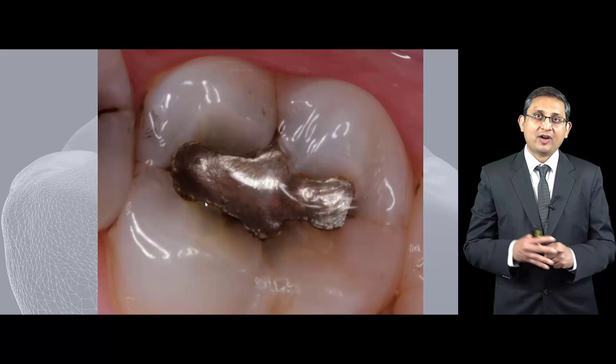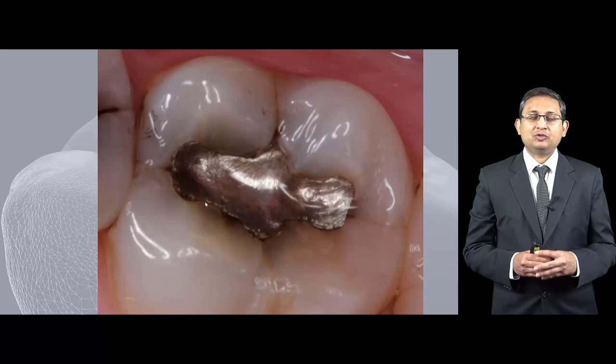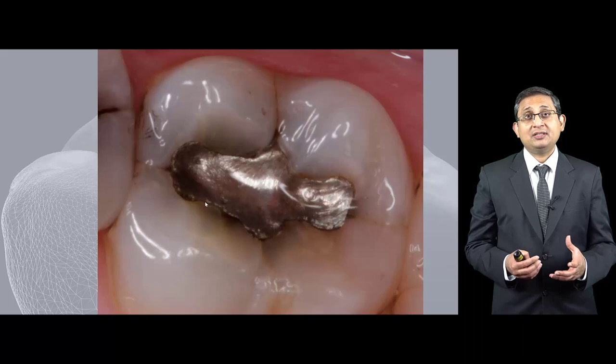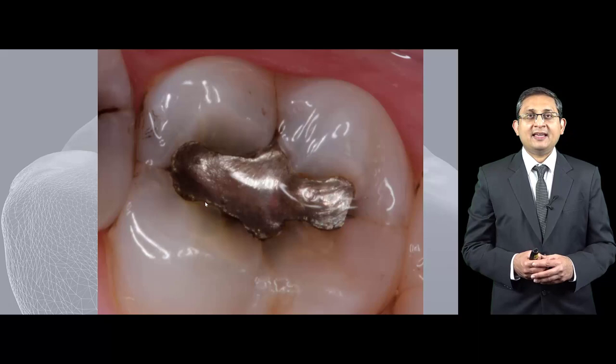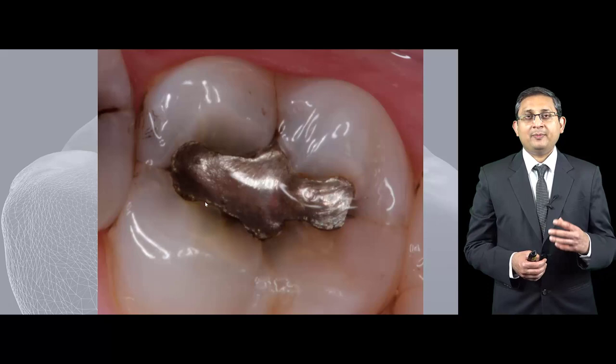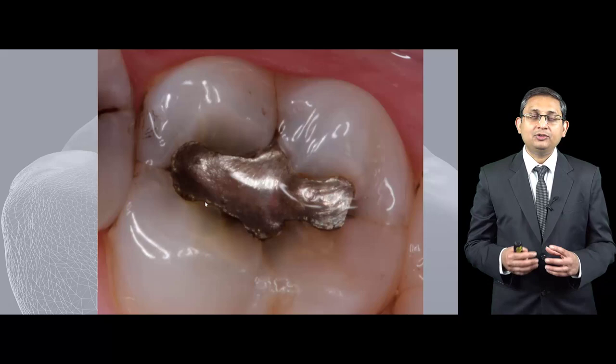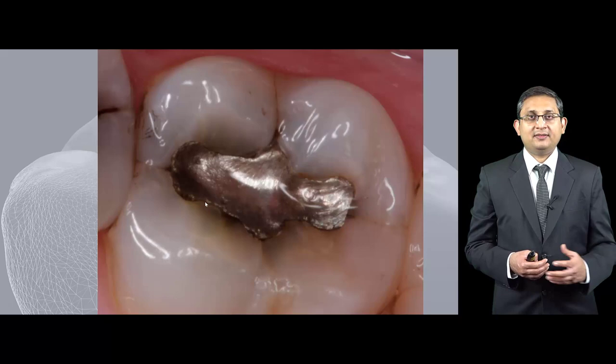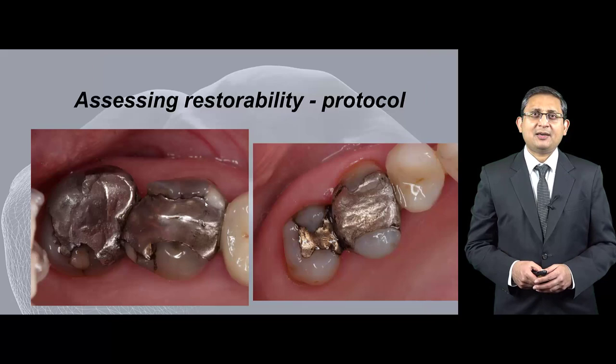If the tooth is symptomatic, I would crown the tooth and keep the patient in a provisional crown for a couple of months to make sure the tooth is symptomless. This is because if the tooth needs root canal treatment, it's better to do it during the provisionalization stage rather than after you've finished the final restoration — that way you're not going through your new crown.